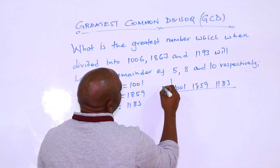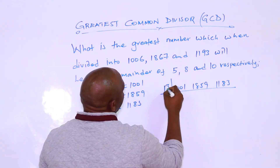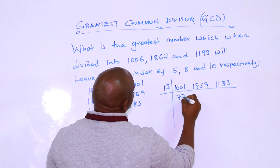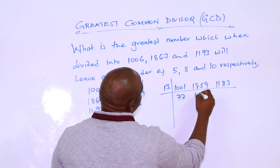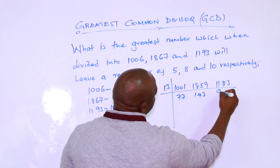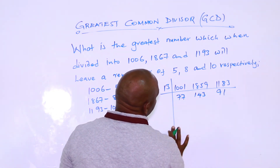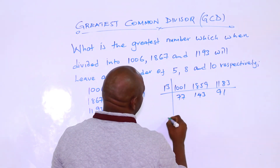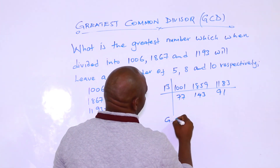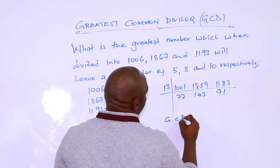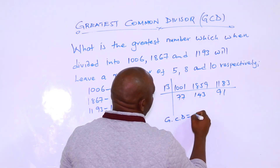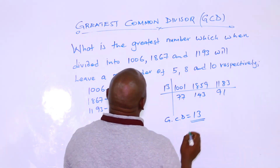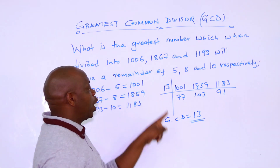You then find the GCD of 1001, 1859, and 1783. Dividing down, you get 27, 173, and 181. And therefore, that number is the GCD of those results.